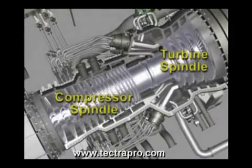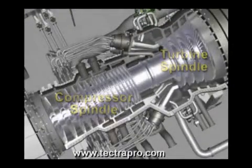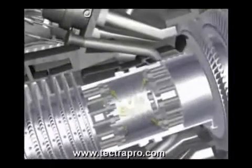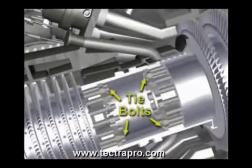The rotor is made up of a bladed compressor spindle and a bladed turbine spindle that is bolted together to make one single shaft.